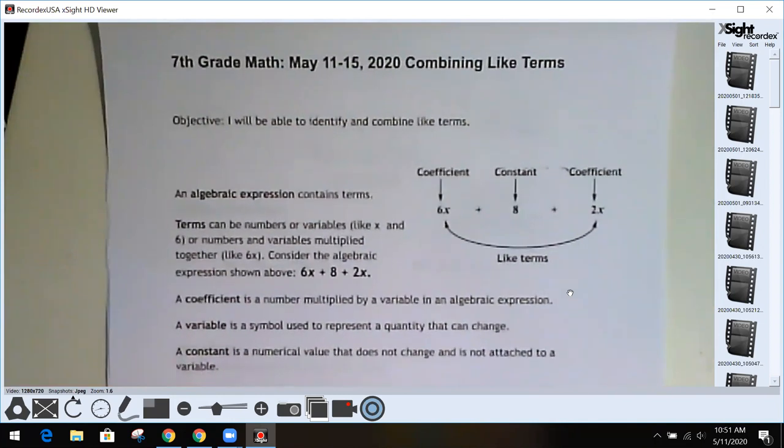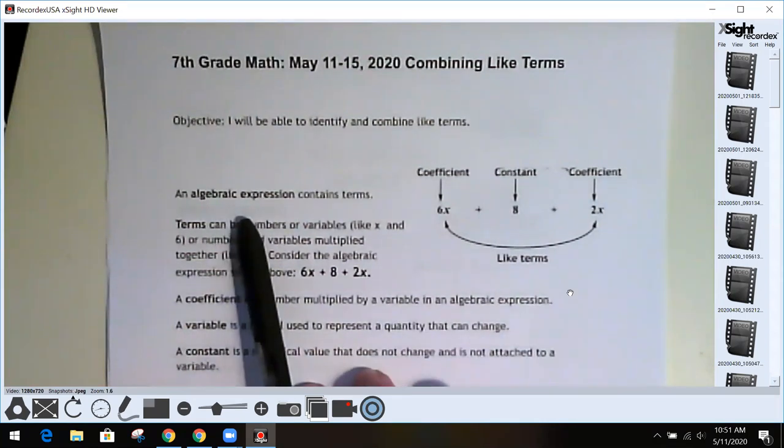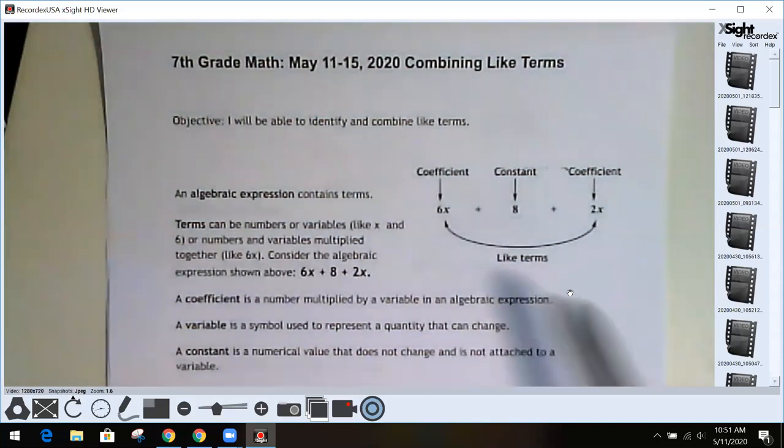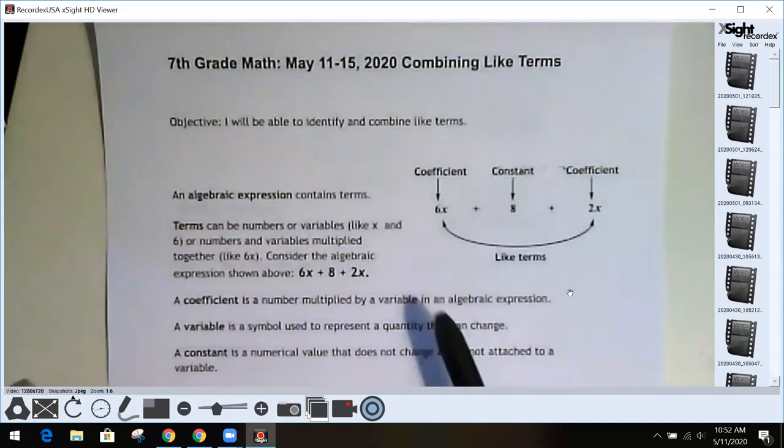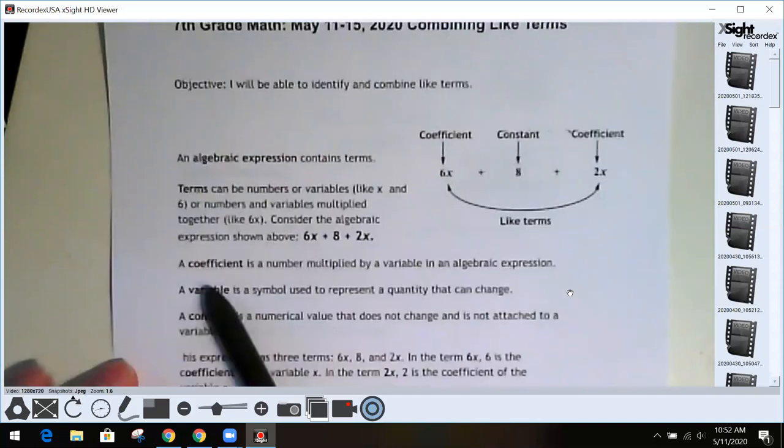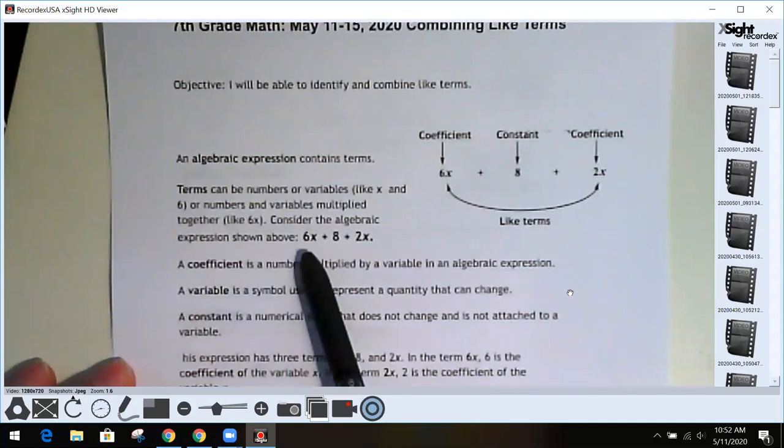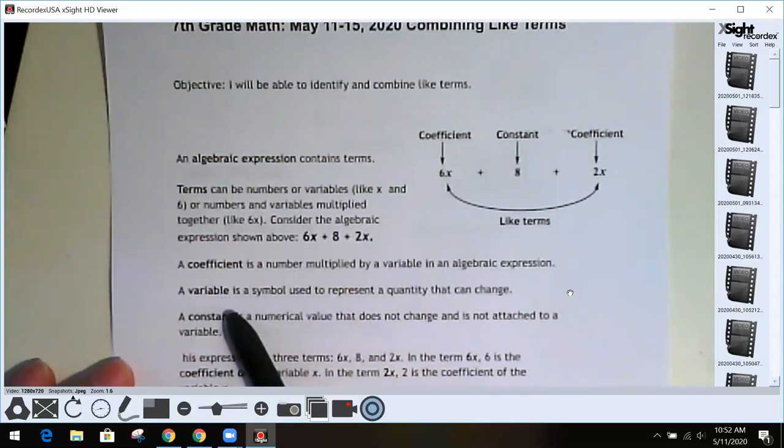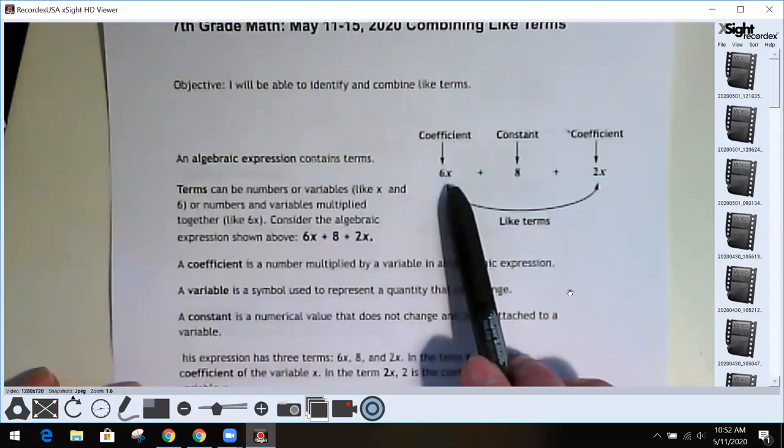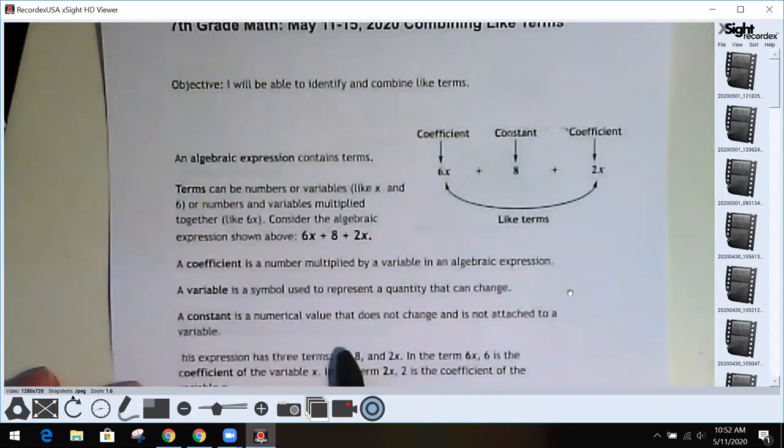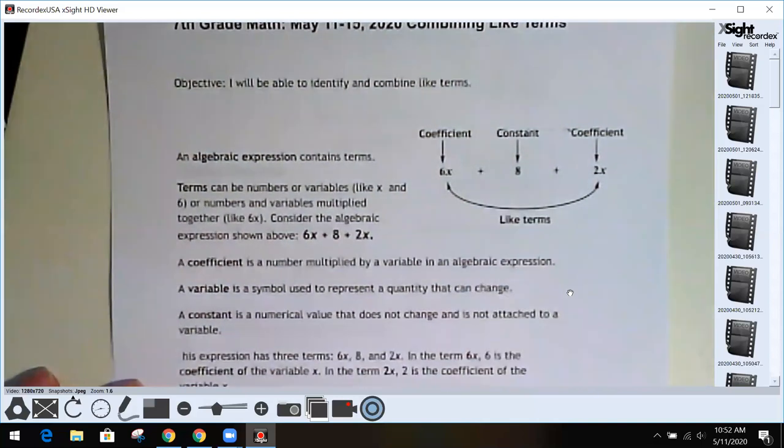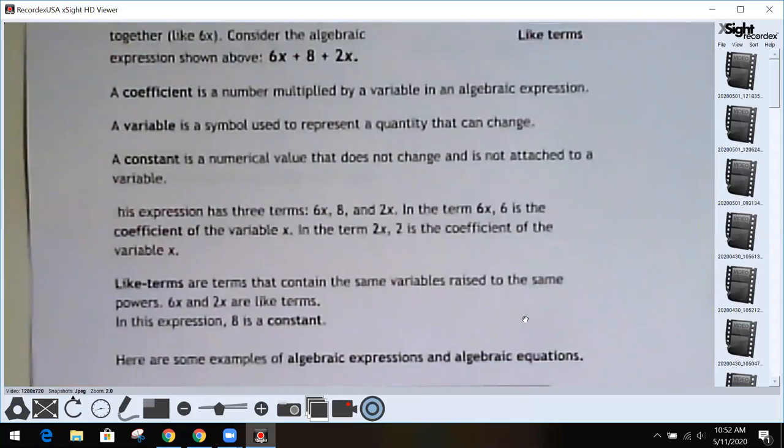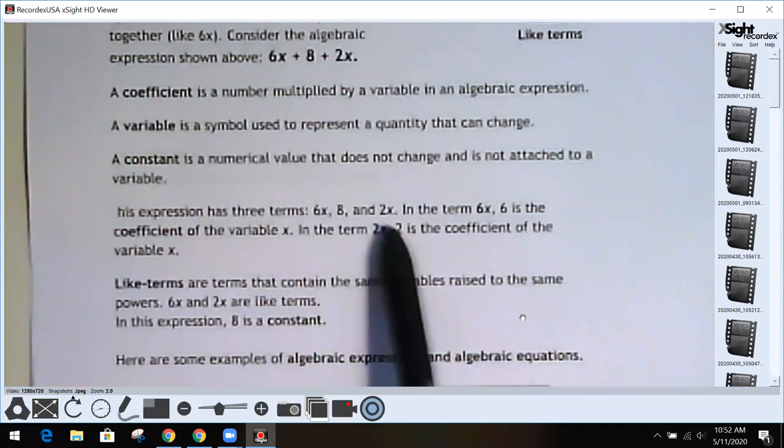So algebraic expressions contain terms. Each of these things here is a term. So this has three terms: 6x, 8, and 2x. Terms can be just numbers or they can be numbers and variables. The coefficient is a number multiplied by a variable. So in this case, the 6 is the coefficient—it's just the number that's multiplied by that variable. A variable is a symbol used to represent a quantity that can change. So in this case, x is the variable. And a constant is a numerical value that does not change, is not attached to a variable—basically just a plain old number has a fancier name where it's called a constant.